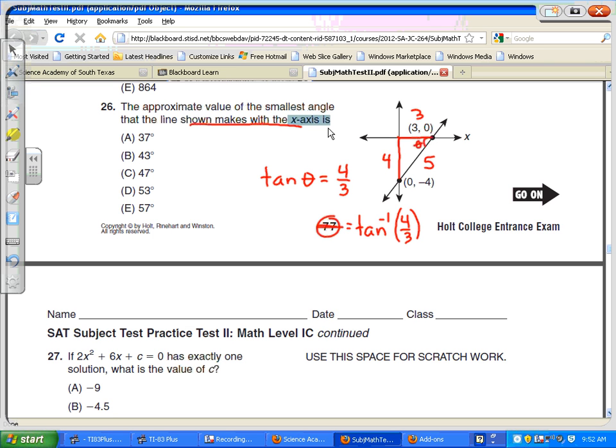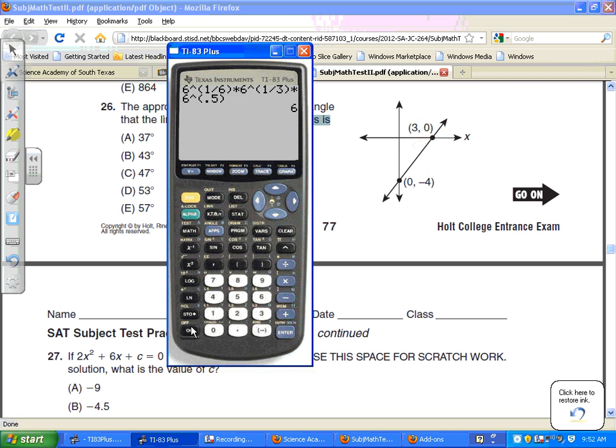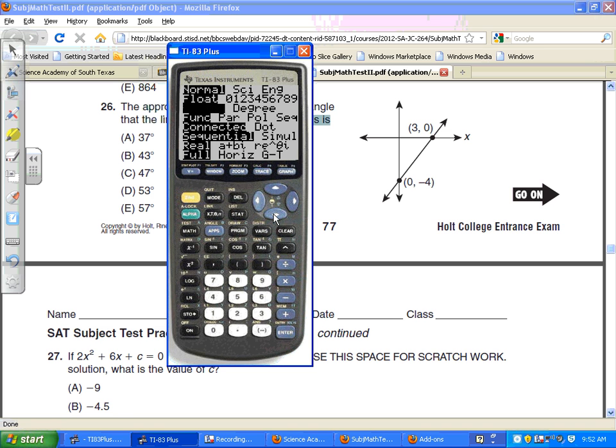So what we'll do is we'll take our calculator and take the inverse tangent of 4 over 3, and we have that. Of course, that's in radians, so what we need to do is change that to degrees.